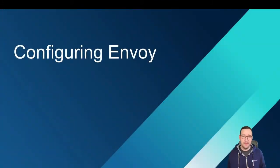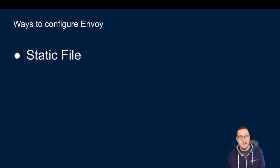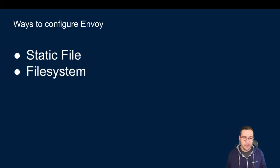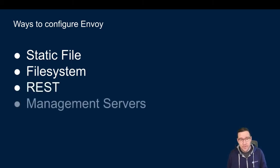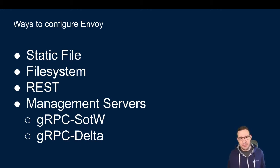Now that I have these core concepts, I need a way to configure Envoy with these types — routes, listeners, clusters, etc. There are a couple of ways to do this. The first is to implement a static file: build a file, program in all the different routes and listeners, and pass that off to Envoy. I can also point Envoy to a directory on the filesystem and it will load files dynamically. I can use REST endpoints for my management server, or I can use gRPC — which is what we're going to do today. gRPC has an advantage over REST: REST has the pull model which is slow with a lot of overhead, whereas gRPC is a rich connection that lets me stream changes bidirectionally very easily.